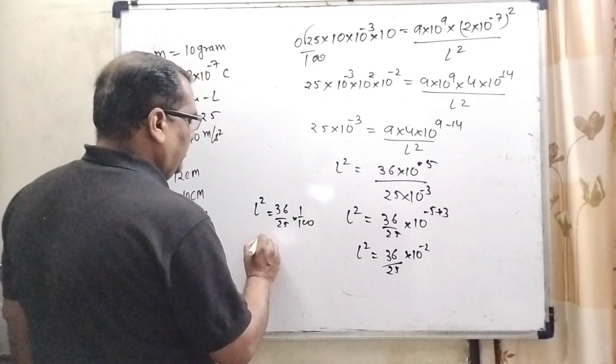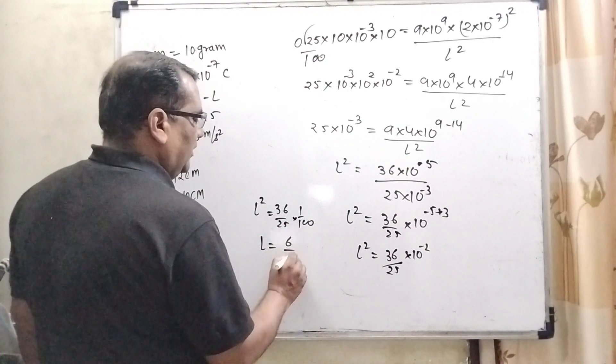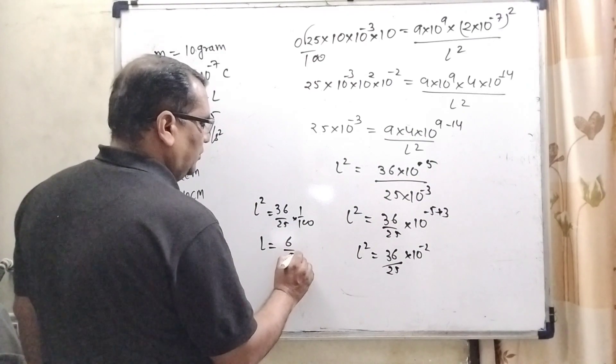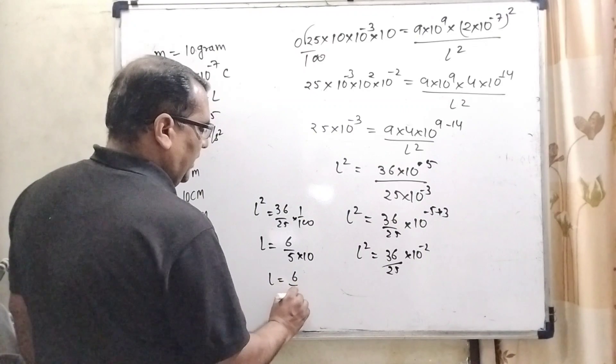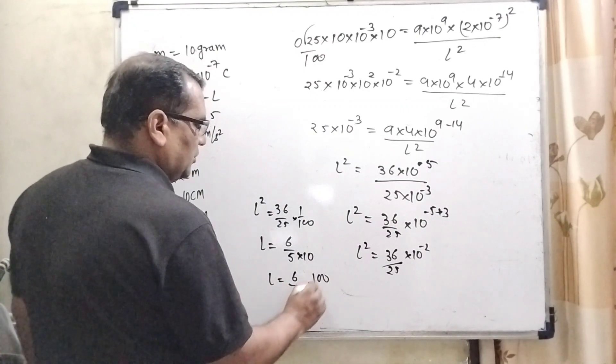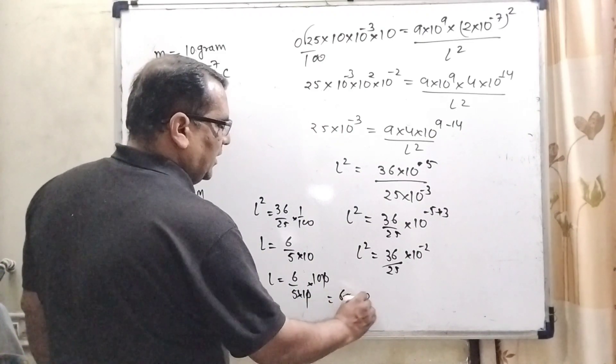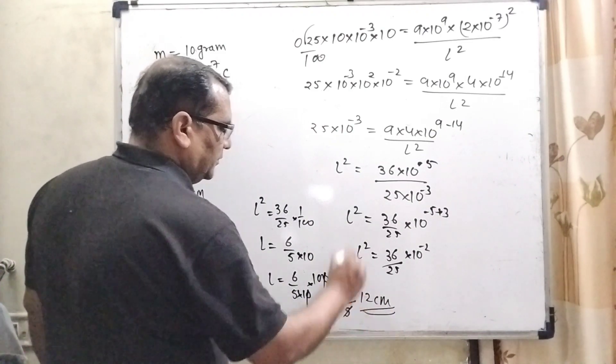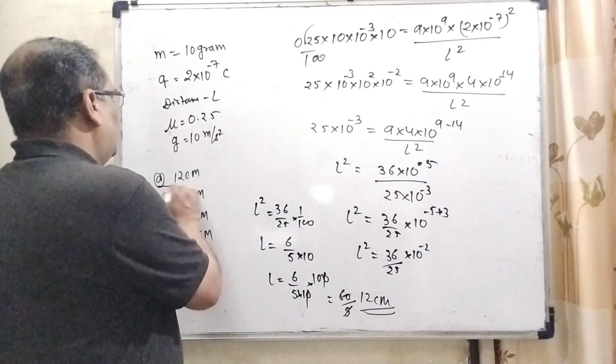Now it can be written as L = 6/5×1/10. Convert into centimeter by multiplying by 100. So we get 60/5 = 12 centimeter. So here the correct answer is 12 centimeter.